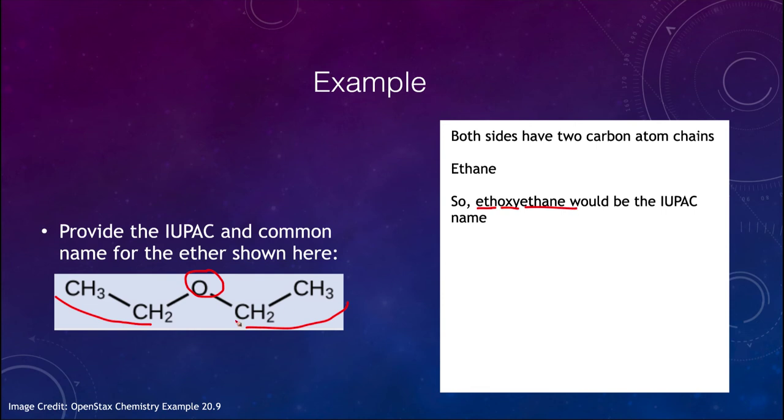Now, we also want to look at the common name, and the common name would be, since we have two ethyl groups, we could use the common name would now be diethyl. So you wouldn't call it ethyl ethyl, you call it diethyl, because remember, di, the prefix meaning two, so it's a diethyl ether. So the IUPAC name would be the ethoxyethane, and the common name would be diethyl ether.